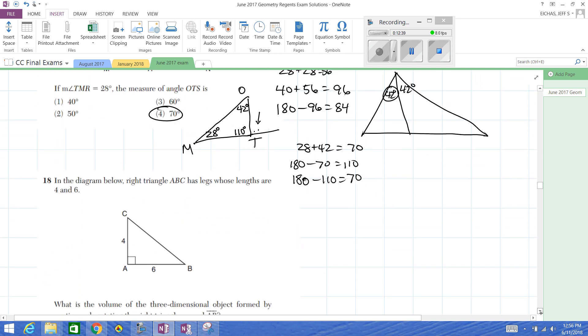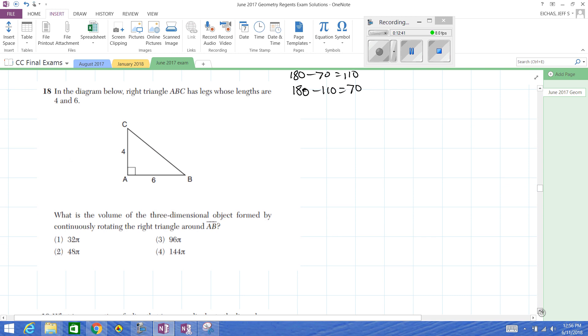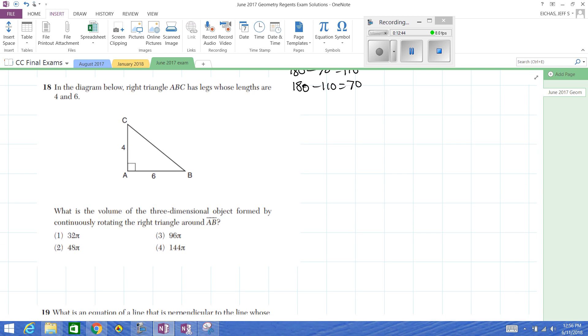All right, last one for this video. So now they're telling us to rotate this triangle around 360 degrees around AB. What we're trying to do is explain to you the model that we'll create is a cone. I don't know if you can see that, but think, if we rotated this 360 degrees, it's essentially creating a cone. Now the radius of that cone is 4, and the height of that cone is 6.